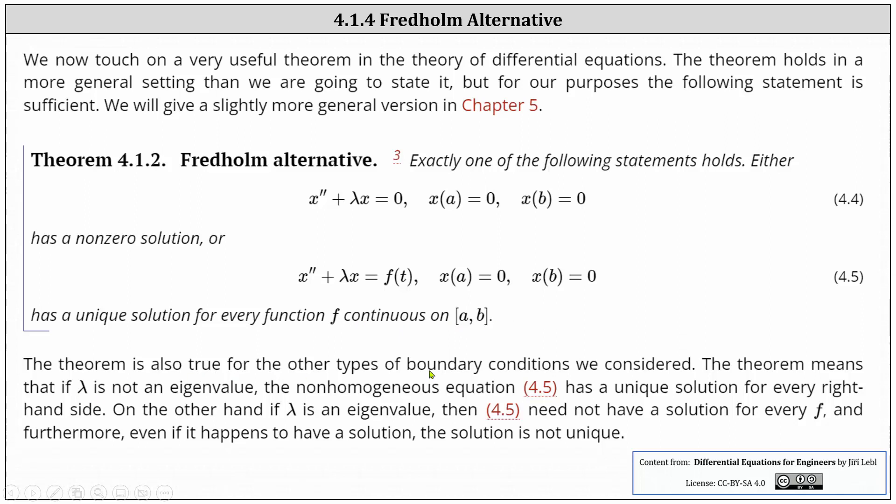The theorem is also true for the other types of boundary conditions we considered in our previous lessons. The theorem means that if lambda is not an eigenvalue then the homogeneous equation 4.5 has a unique solution for every right hand side. On the other hand if lambda is an eigenvalue then the non-homogeneous equation 4.5 need not have a solution for every f and furthermore even if it happens to have a solution the solution is not unique.